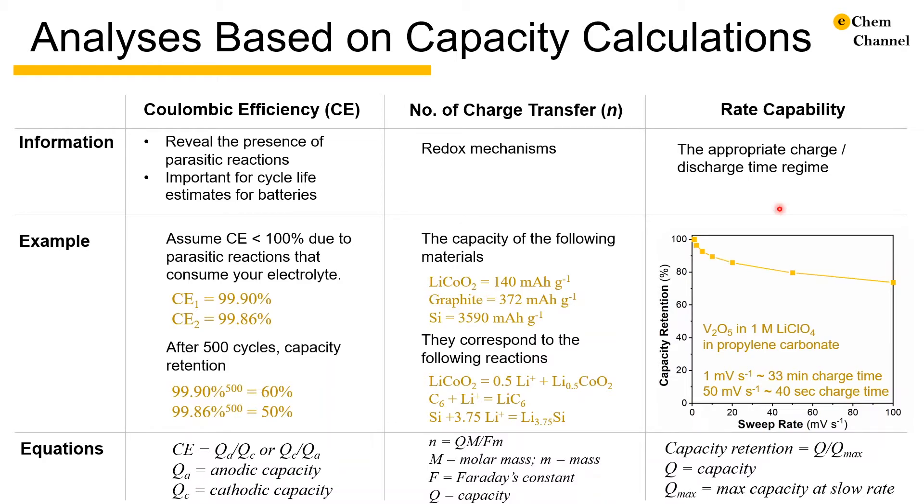Finally, rate capability analysis can give you a sense of appropriate time regime for the charge discharge of material under study. In the example here, I plotted the capacity retention as a function of sweep rate for vanadium pentoxide thin film cycling in 1 molar lithium perchlorate in propylene carbonate.